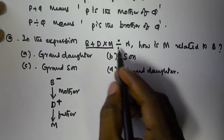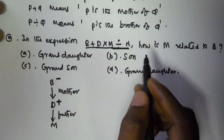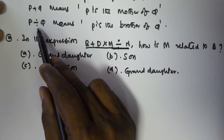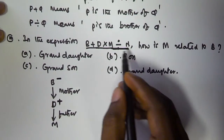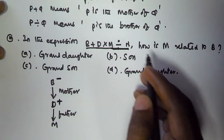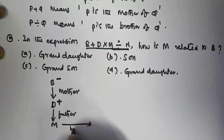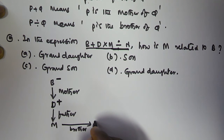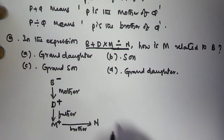Next, M ÷ N. P ÷ Q means P is the brother of Q, so in the same manner M ÷ N means M is the brother of N. That means M is a male.